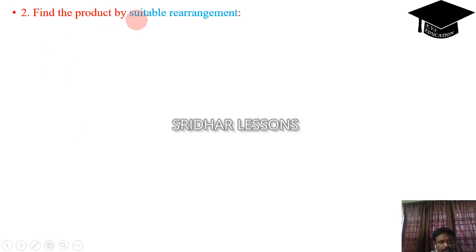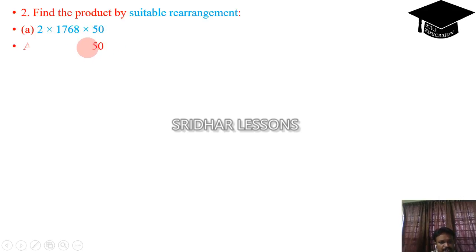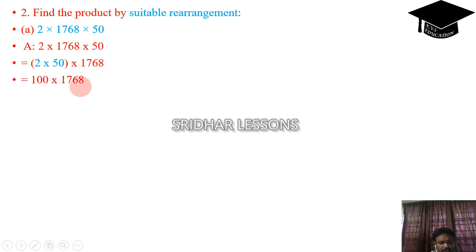Find the product by suitable rearrangement. 2 into 1768 into 50: we can rearrange this as 2 into 50 multiplied by 1768. That means 100 into 1768, which gives 176800 — we get 2 zeros. This is how we make products easily.